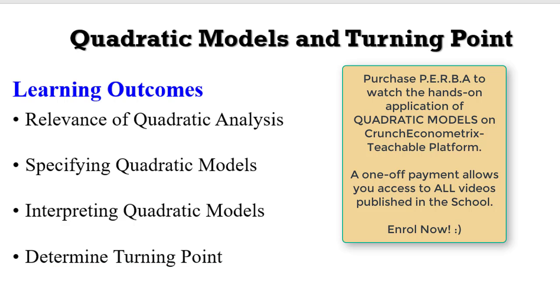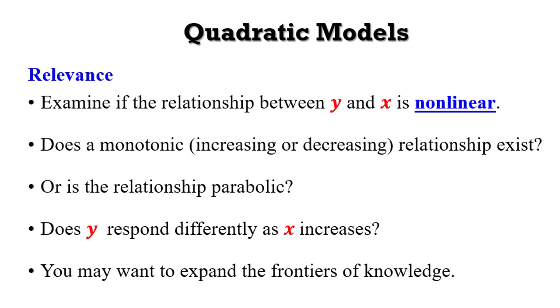Why are quadratic models gaining attention and why are they attractive to researchers? You may want to examine if the link or the relationship between Y and X is nonlinear. The theory may say they are linear where you want to test that perhaps that relationship is nonlinear. You may also want to know if the relationship is monotonic, whether increasing or decreasing, or is there a parabolic relationship. You may also want to know if Y responds differently as X increases in value, or perhaps you just want to expand the frontiers of knowledge.